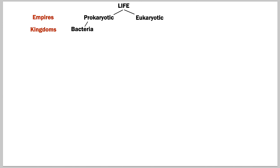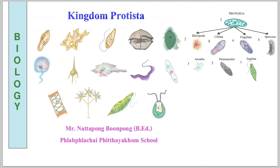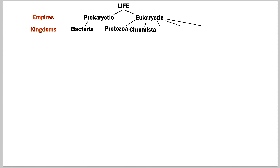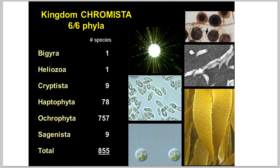Moving into eukaryotic, it branches out into five kingdoms. The first is protozoa — a little more advanced, looking like alien spaceships or alien life forms, with very unique characteristics and shapes. Then we have the chromista kingdom, with a good variety including what appears to be brown algae.